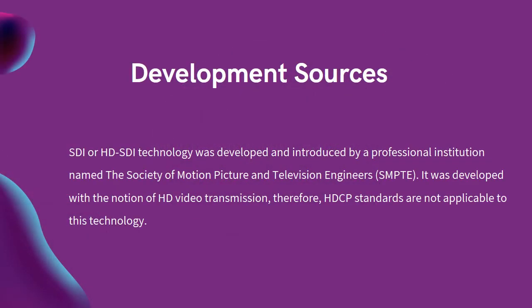Development Sources: The first criteria for differentiation between HDMI and SDI is the source of development. HDMI was developed and introduced by movie producers and electronics companies in collaboration. The main purpose was to transfer video signals via a single cable in compliance with High-Bandwidth Digital Content Protection, HDCP, standards. On the other hand, HD-SDI technology was developed and introduced by a professional institution named the Society of Motion Picture and Television Engineers, SMPTE. It was developed with the notion of HD video transmission, therefore HDCP standards are not applicable to this technology.